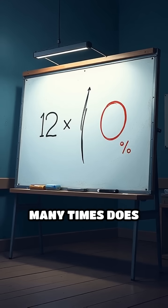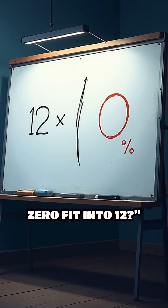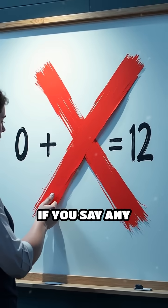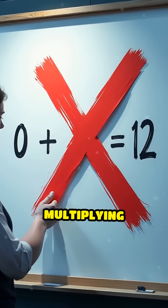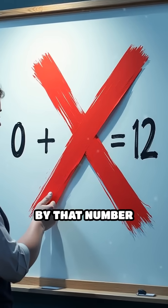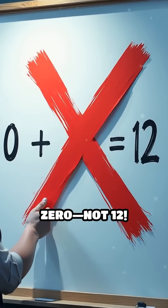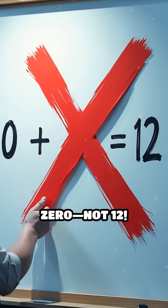Division asks: how many times does 0 fit into 12? If you say any number, multiplying 0 by that number always gives 0, not 12.